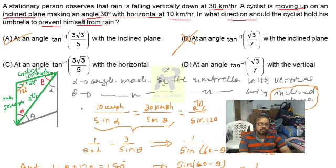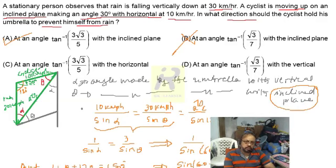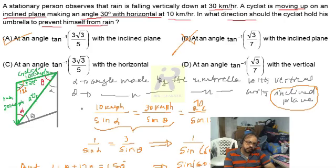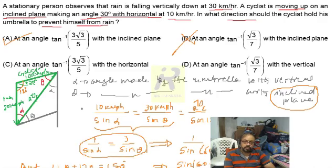Now let us check whether any of the answer options are correct. Here one option gives the angle with respect to the horizontal and another with respect to the vertical. Alpha is the angle made by the umbrella with the vertical. Using the same diagram and the same sine rule equation, I now need to find alpha by eliminating theta.